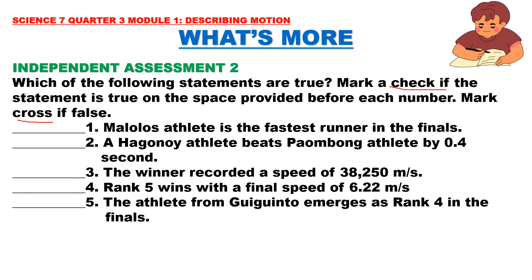Statements: 1. Malolos athlete is the fastest runner in the finals. 2. Hagonoy athlete beats Paumbong athlete by 0.4 second. 3. The winner has a speed of 6 m/s. 4. Rank 5 wins with a final speed of 6.22 meters per second. 5. The athlete from Giginto emerges as rank 4 in the finals.